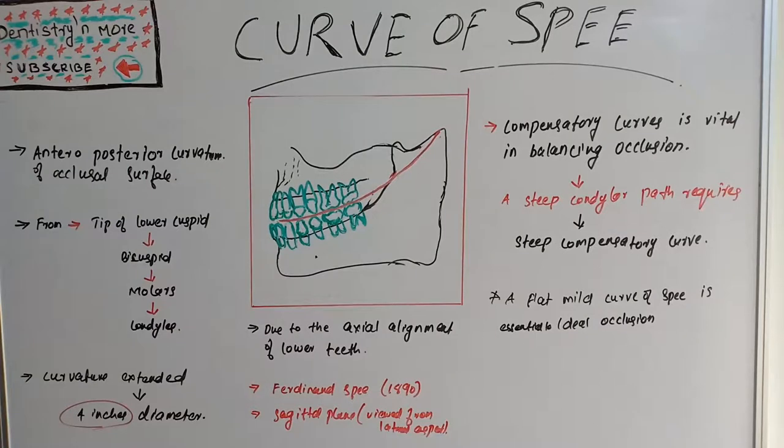That is all about curve of spee. It is an imaginary curve on sagittal plane starting from canine to condyle to make a perfect balanced occlusion. I will come up with a new session on dentistry and more. Thank you.